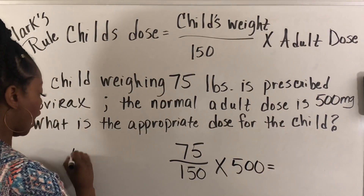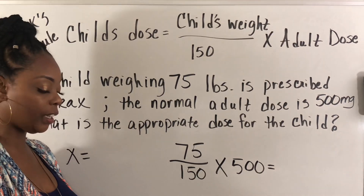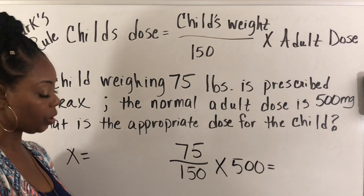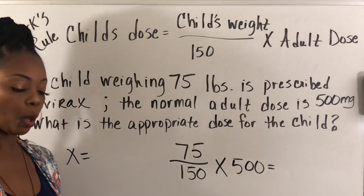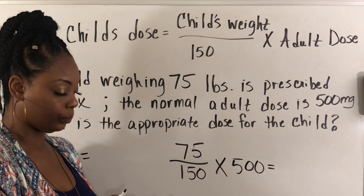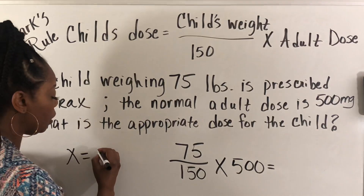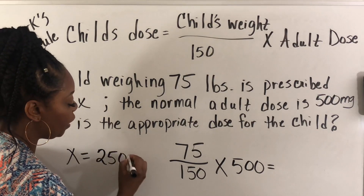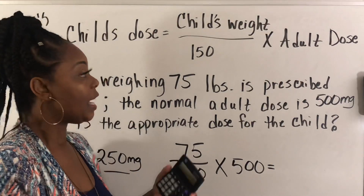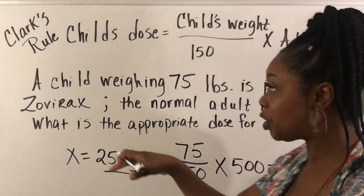We are trying to get the child's dose. So: 75 divided by 150 times 500. If you came up with 250 milligrams, you are absolutely correct. It's just a matter of memorizing the formula — that's really it.